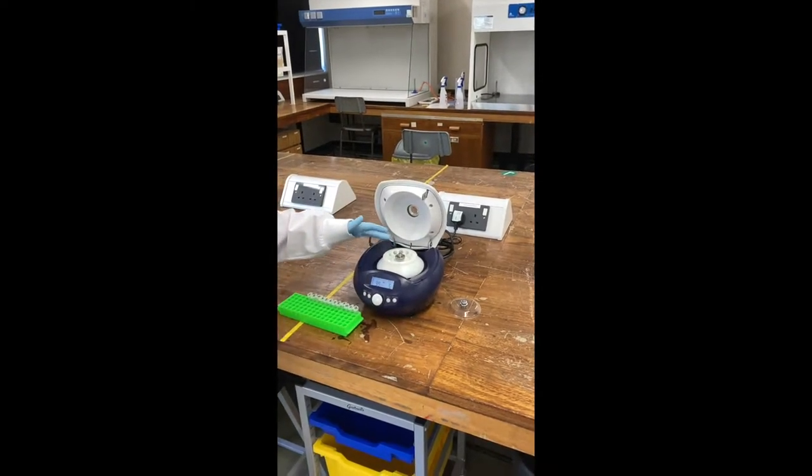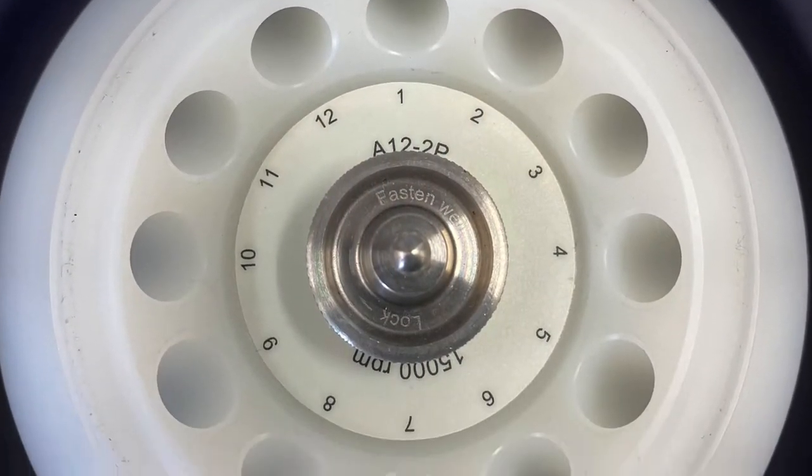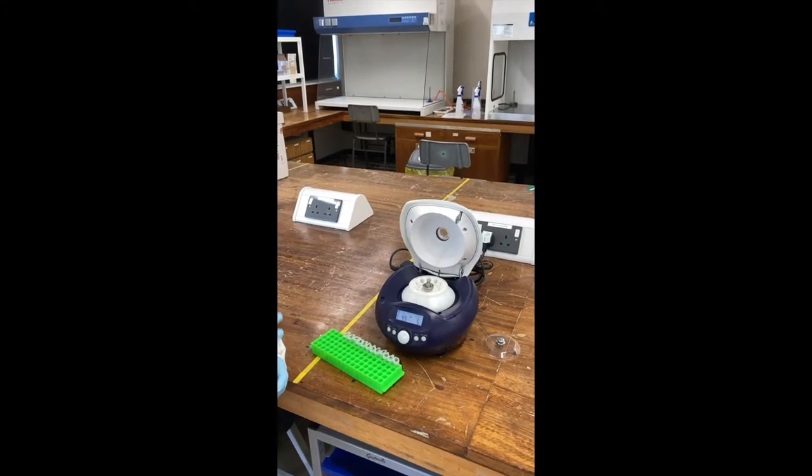The first thing you'll notice is the various holes within the centrifuge. This one will go up to 12, they're the different positions you can put samples in. The most important thing when you're using a centrifuge is to make sure that it's balanced.